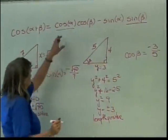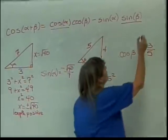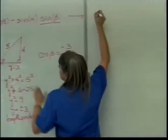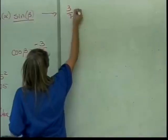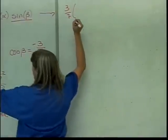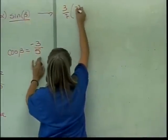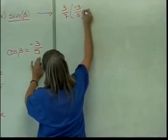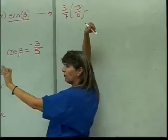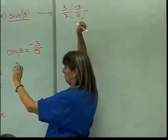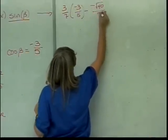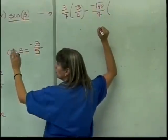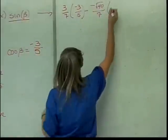So then, I can actually plug all this in here, and I will get cosine of alpha was 3 over 7. Cosine of beta is negative 3 over 5 minus the sine of alpha. There we go. Negative square root of 40 over 7 times the sine of beta which was 4 over 5.